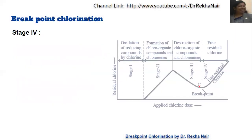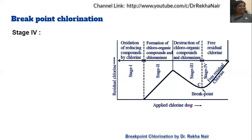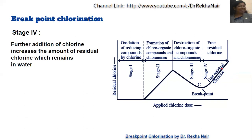In Stage 4, if we continue applying more chlorine dose, there is an increase in residual chlorine. This is because at the breakpoint, complete destruction of all organic compounds, ammonia, chloramines, bacteria, and germs has already occurred, giving almost 100% disinfection. Any additional chlorine added simply increases the chlorine level in the water — this is called free residual chlorine. So in Stage 4, we get free residual chlorine.